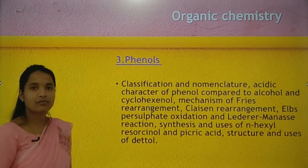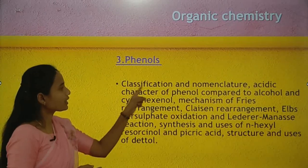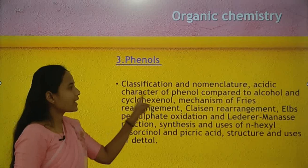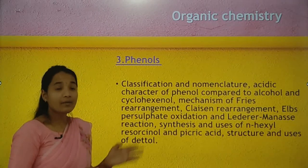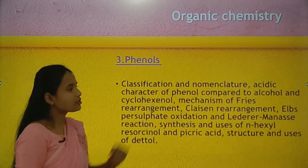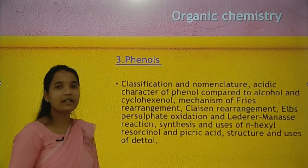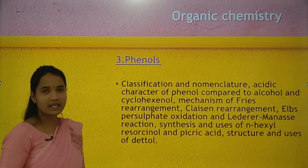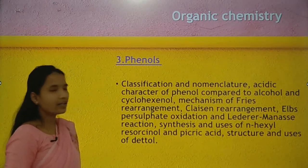The next chapter is phenols. Learning points include classification and nomenclature of phenols, acidic character of phenols compared to alcohols and cyclohexanol, mechanism of Fries rearrangement, Claisen rearrangement, Elbs persulfate oxidation, Lederer-Manasse reaction, synthesis and uses of n-hexyl resorcinol, picric acid, and the structure and uses of Dettol.